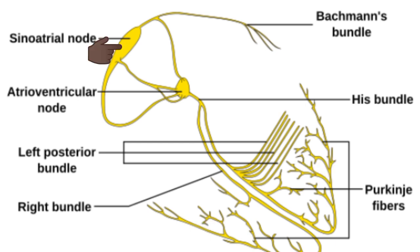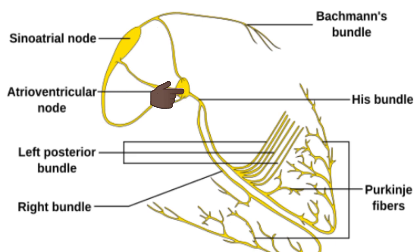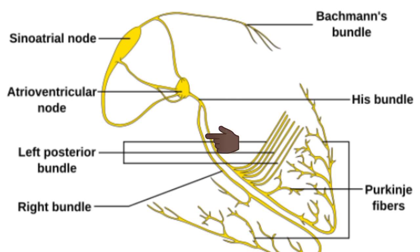The sinus node initiates the cardiac impulses. The internodal pathway conducts impulses from the sinus node to the atrioventricular node. The AV node delays impulses from the atria to the ventricle. The AV bundle conducts impulses from the AV node to the ventricles, and the right and left bundle branches of the Purkinje fibers conduct impulses to all parts of the ventricles.